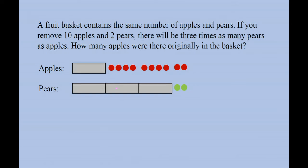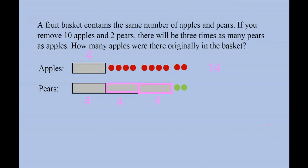By comparing the two pictures, I can conclude that each rectangle must be equivalent. This rectangle must represent four pears — that's the only way they'll match. Each of the three rectangles also represents four pears, and therefore this one must represent four apples as well. The question asks how many apples were originally in the basket before removing 10. The answer is 4 plus 10, which is 14. There must have been 14 apples originally. Make sure you understand the visual representation and how we worked backwards — that makes a difference.